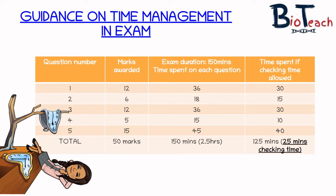Question three is also worth 12 marks, so it's the same as question one: between 30 and 36 minutes. Question four is worth five marks, so I would recommend spending 10 to 15 minutes writing your answer. And question five is worth 15 marks, so I would say between 40 and 45 minutes.